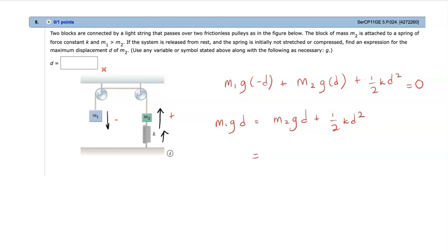So I'm seeing some opportunity to cancel out some terms, so I'm going to cancel out D over here, and this leaves me with M1G equals to M2G plus 1 over 2 KD. So I'm just left with this guy over here, so I can rearrange this again to become M1G minus M2G times 2 divided by K. And this would give me D. So this is the expression that I'm looking for.